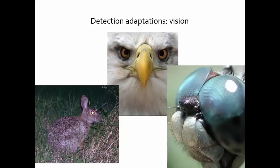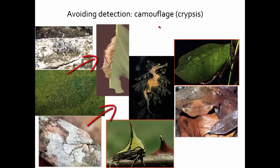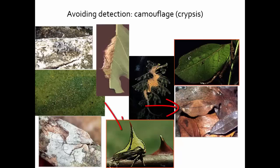If you're a prey item, one way to avoid being detected is to hide well — to be camouflaged. Another word for this is krypsis, so these are cryptic prey. Examples shown include a lichen grasshopper, a flounder that blends with its background, a moth that matches its resting substrate, a caterpillar, a seahorse, a katydid, another moth that looks like dead leaves, and a planthopper that looks like a thorn on a rosebush. They all avoid detection because they are good at hiding.